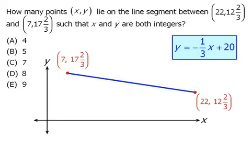Now that we have the equation for our line, notice that in order for x and y to both be integers, x must be divisible by 3. So we are now looking for values of x between 7 and 22 such that x is divisible by 3.